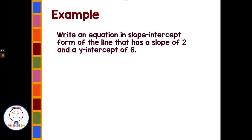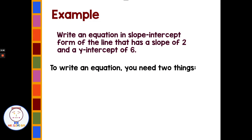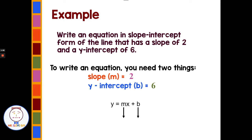For example, write an equation in slope-intercept form of a line that has a slope of 2 and a y-intercept of 6. We have two things to identify: the slope is 2, and the y-intercept is 6. If we plug into y equals mx plus b, we replace m with 2 and b with 6, and get the equation y equals 2x plus 6.